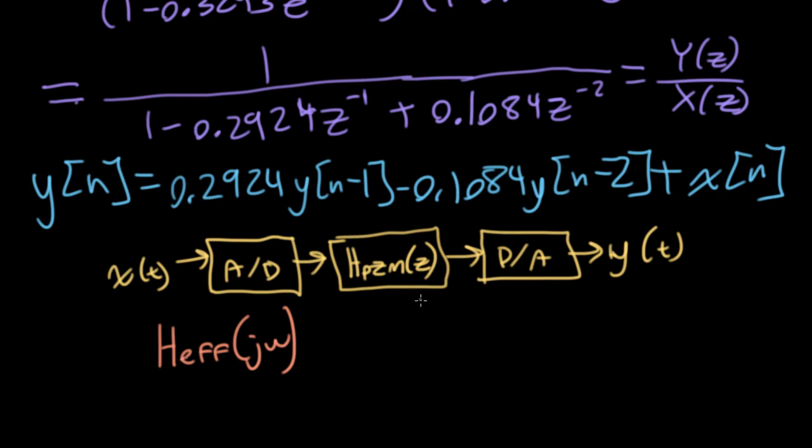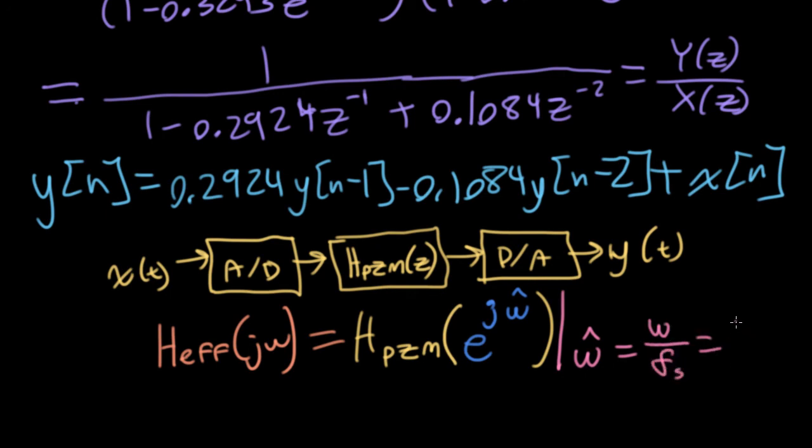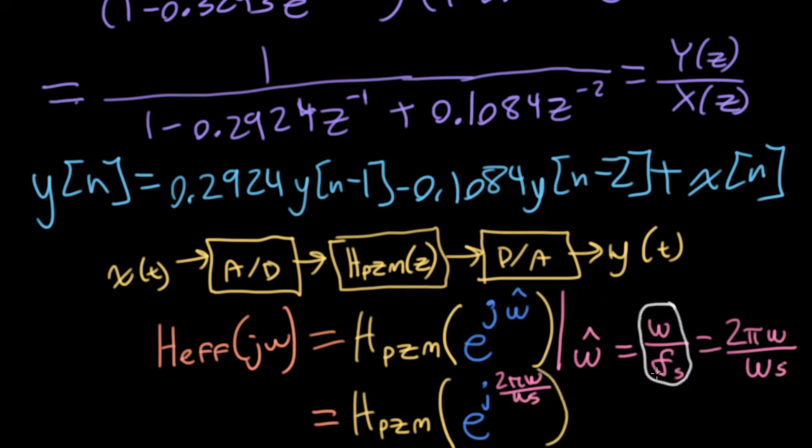So we could define an effective frequency response in terms of an omega without the hat, in terms of a standard frequency for continuous time signals instead of discrete time signals. And the way we would get this is we could take our z domain function and then plug e to the j omega hat into it to get a discrete time frequency response. But then evaluate this at omega hat equals either omega over the sampling rate in hertz, or we could write this as 2 pi omega over omega s.